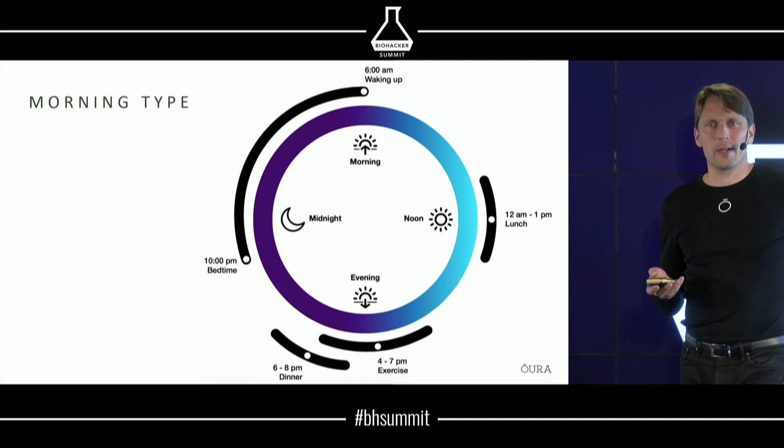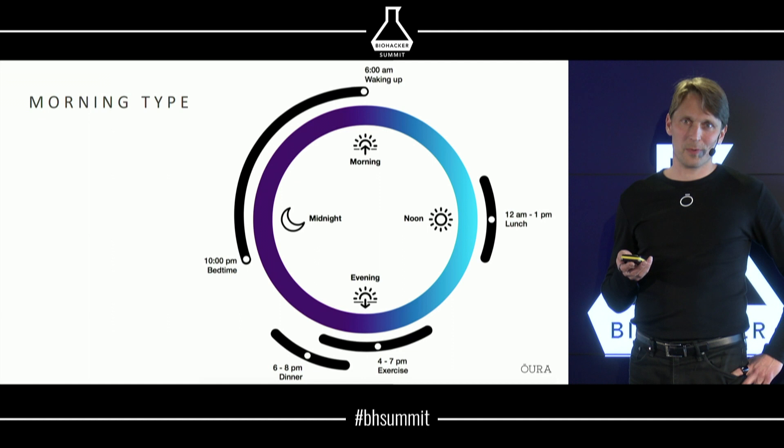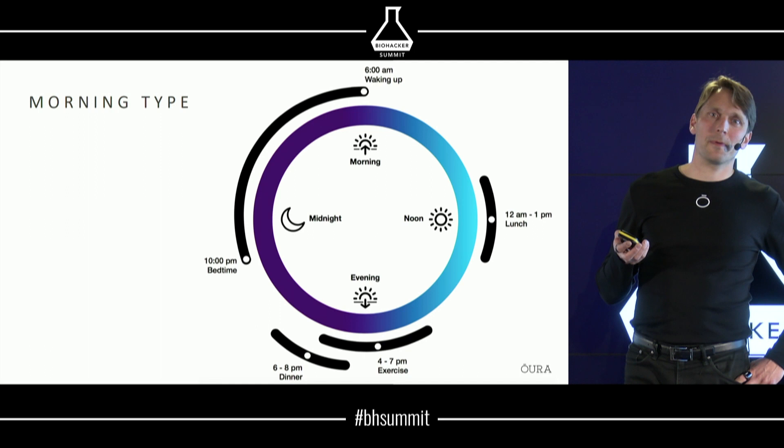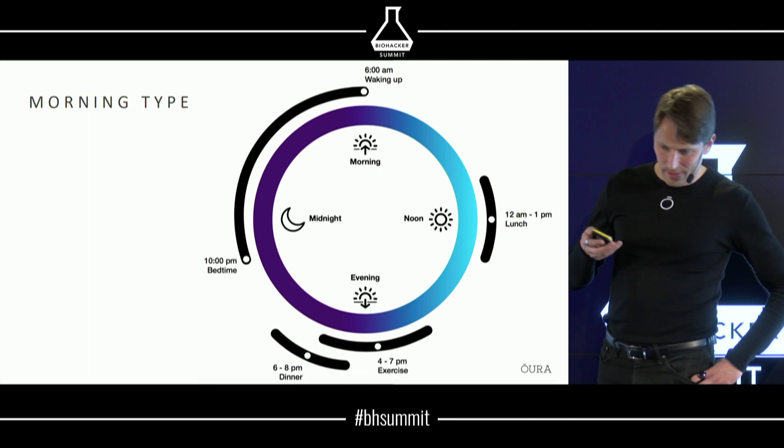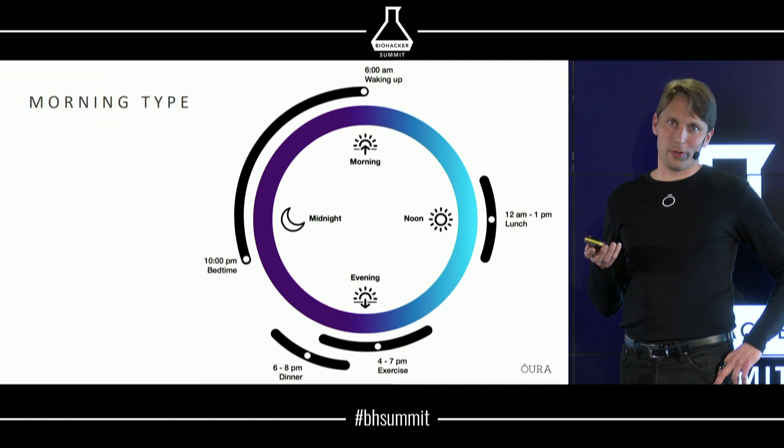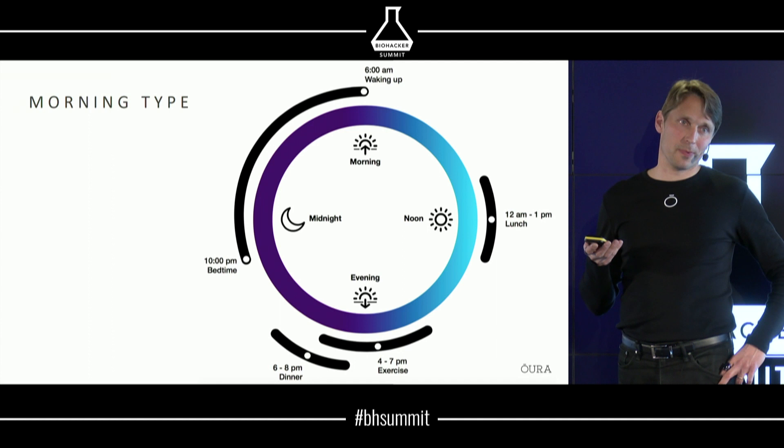The difficult thing here is that we can't provide a universal daily schedule for everybody because we're all different, and because chronotype is at least 50% genetically determined. It's a biological thing — it's not a choice that you can make — but you can train your body and adjust your rhythm slightly.